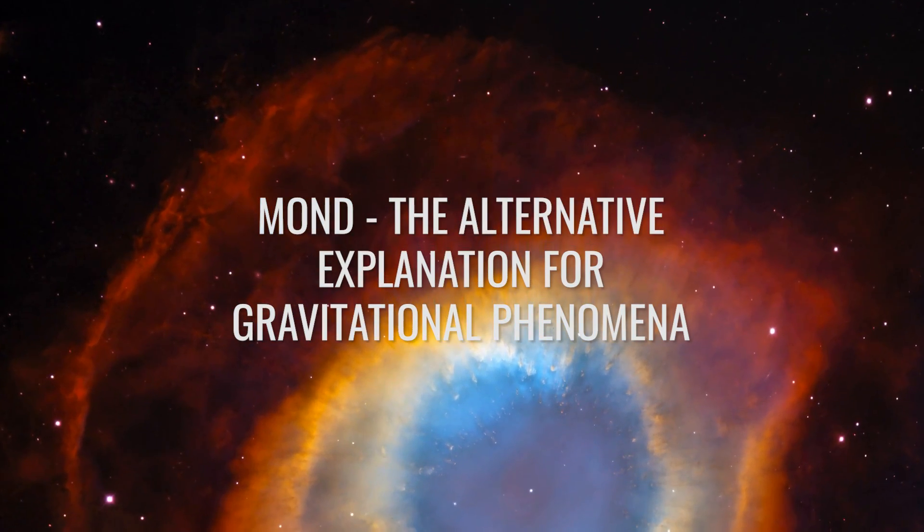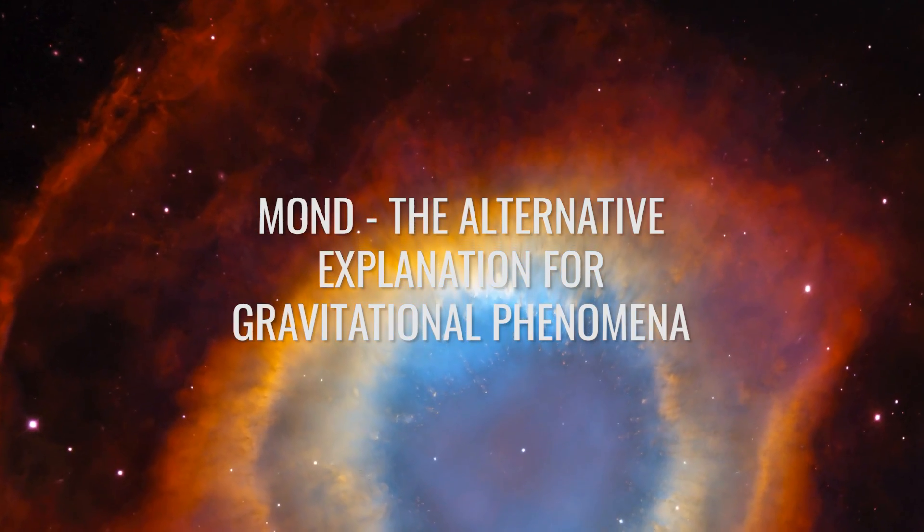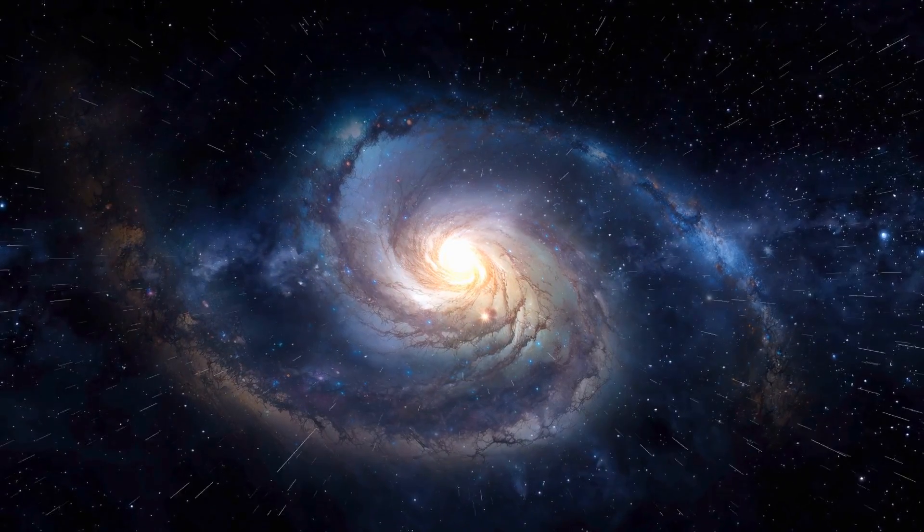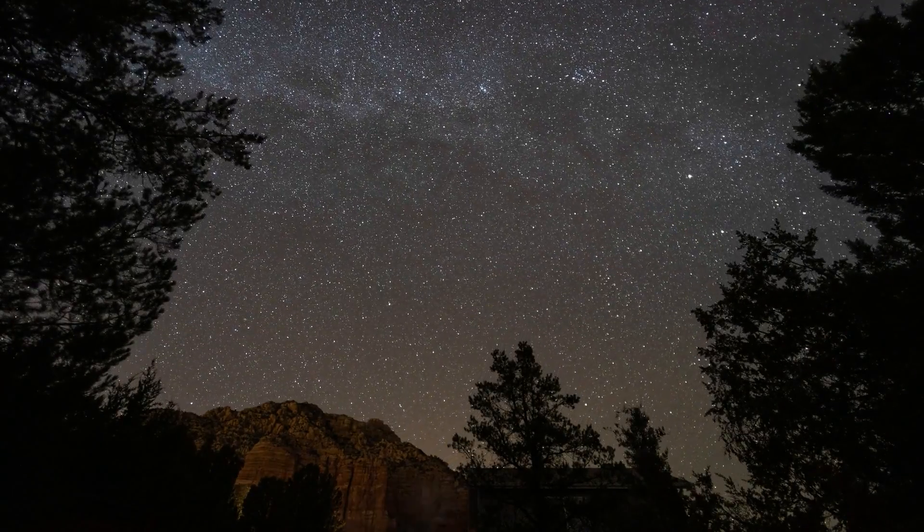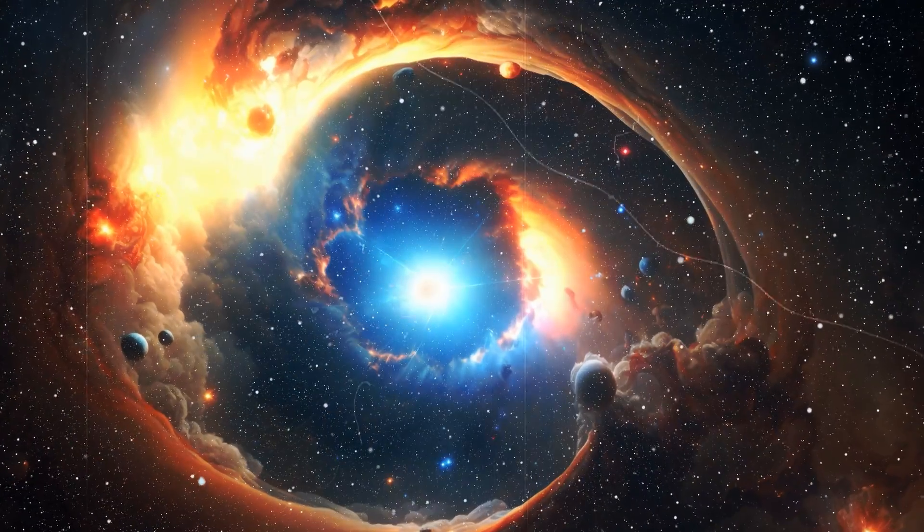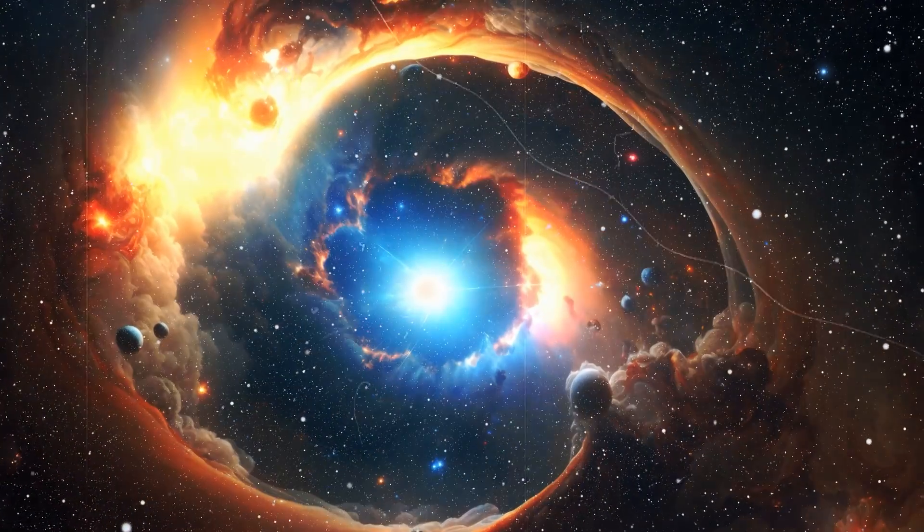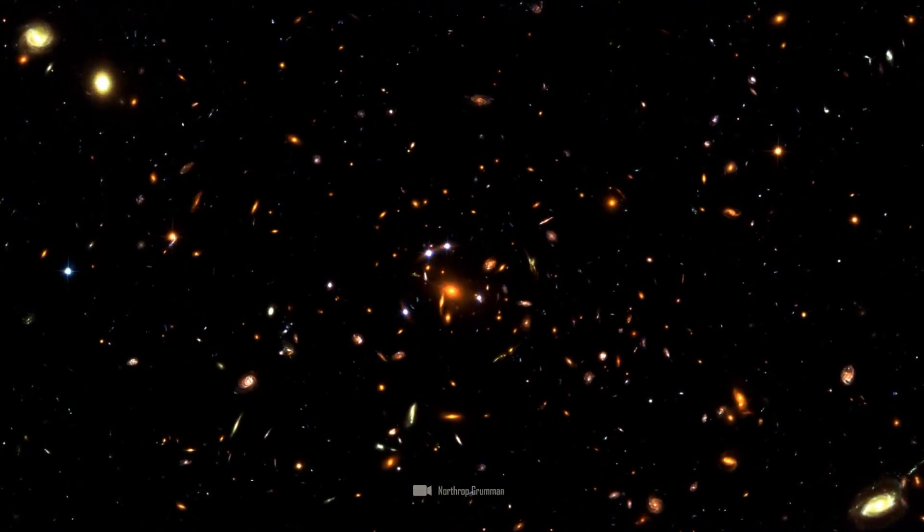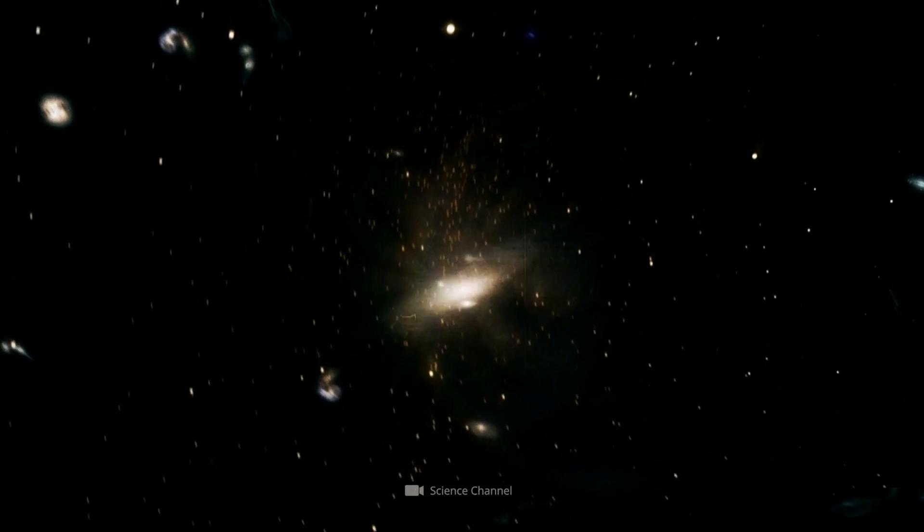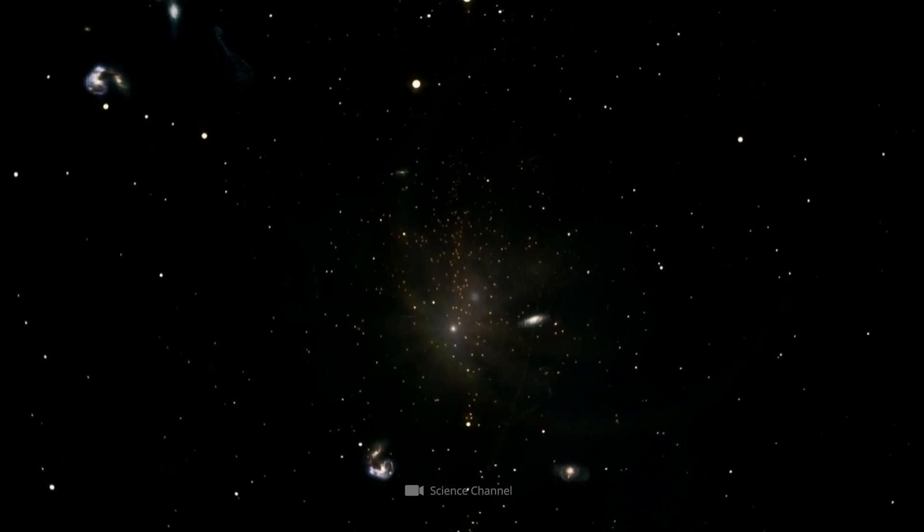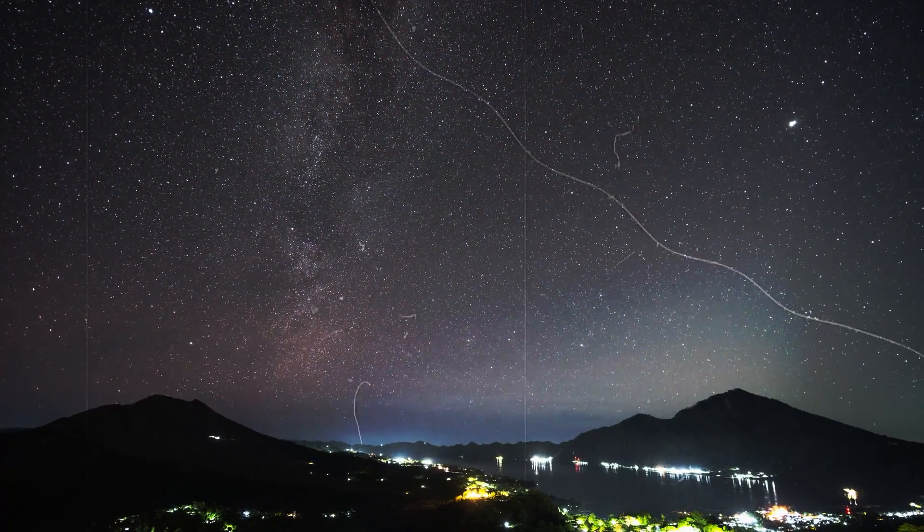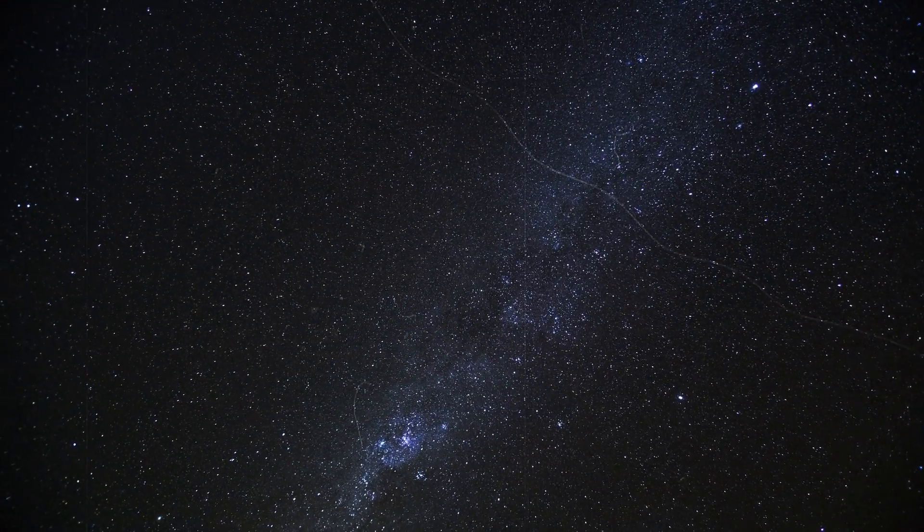MOND – the alternative explanation for gravitational phenomena. Did you know that for many years there have been completely different approaches to describing movements in the cosmos and the interdependencies between objects? One of these alternative theories is Modified Newtonian Dynamics, or MOND for short. The idea proposes that the laws of gravity need to be adjusted slightly at extremely low accelerations, such as those found in the outer regions of galaxies.